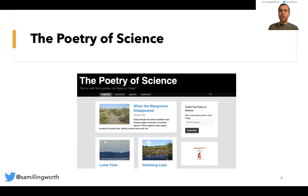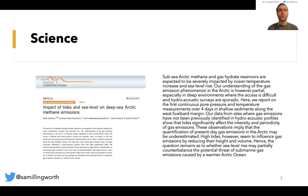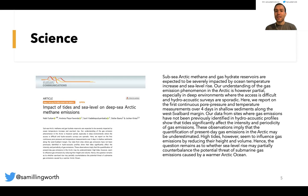To give you an example of what that looks like in practice, there was a fantastic paper published in Nature Communications that looked at the impact of tides and sea level on deep sea arctic methane emissions. The idea is that the moon is responsible for tides, and depending on whether it's low or high tide, this can impact the amount of methane emitted from deep sea trenches at the seabed, which could have huge implications for global climate change. If we look at the abstract, this is a really well-written scientific abstract.